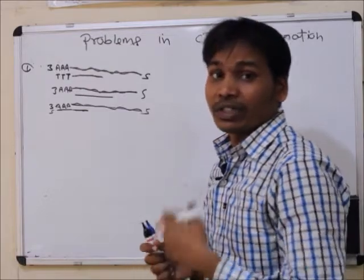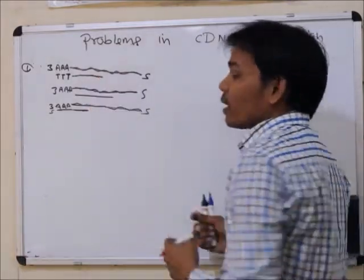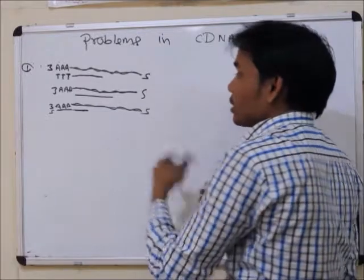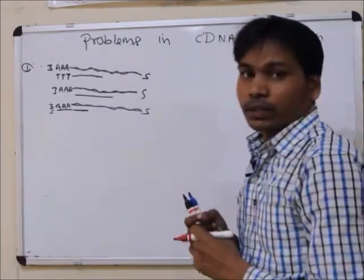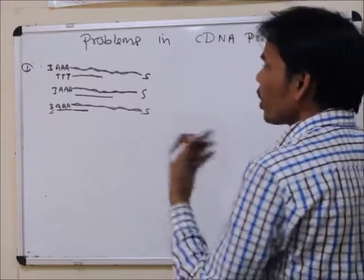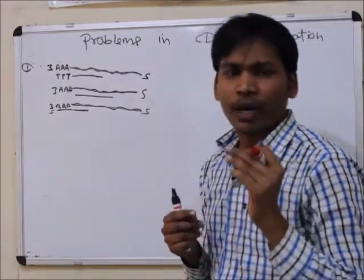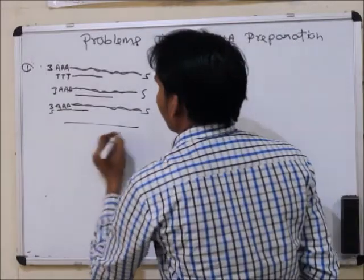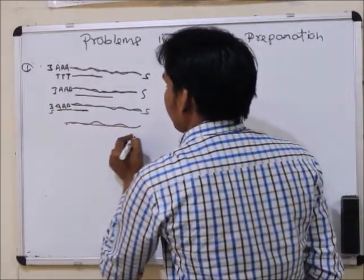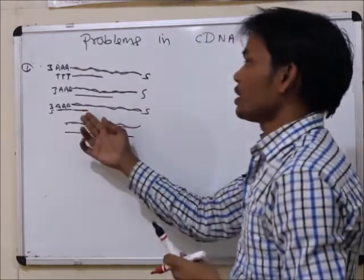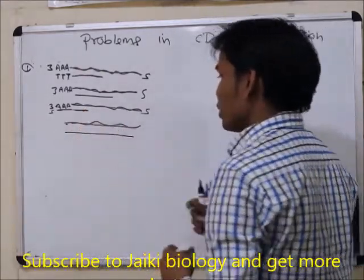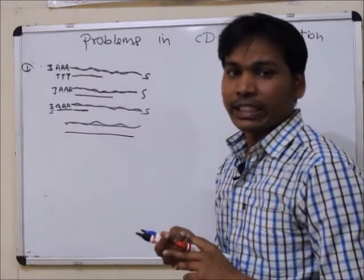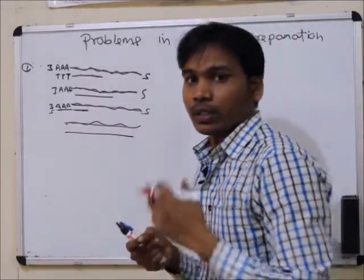These problems can be solved by making primers with random hexamers. After short segments are obtained by hexamer primers synthesizing, we can arrange the cDNA and find the complete sequence. If you want to find a specific full-length mRNA, another technique is used when making the cDNA library, where full-length cDNA strands can be prepared.